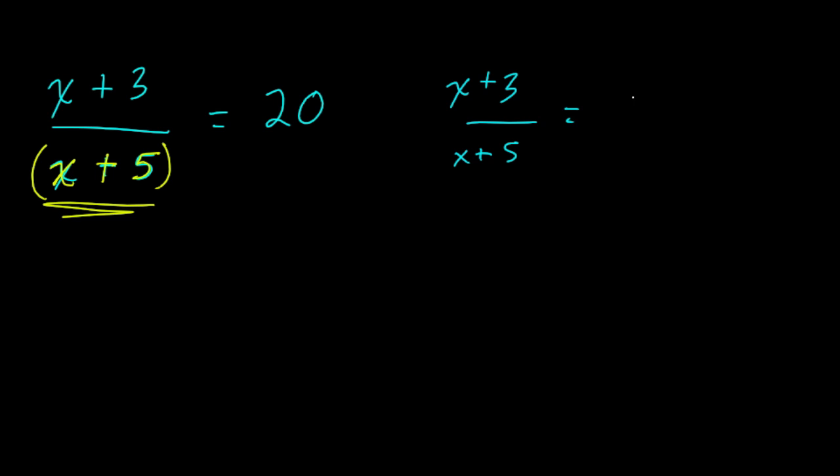And this applies to all kinds of equations. Let's say I have something like x plus 3 over x plus 5. Two expressions, and there is our variable there in the denominator. Let's say it equals something like 20. Well, what do we do now?